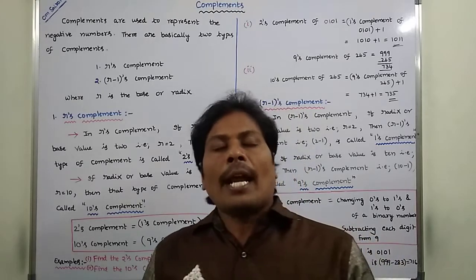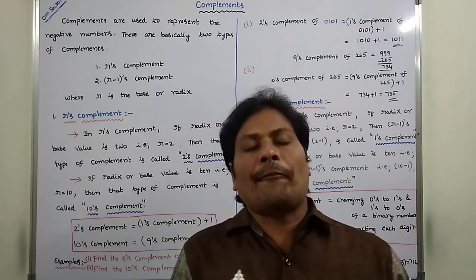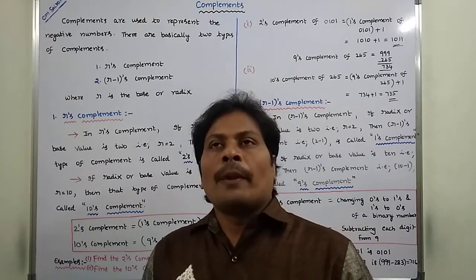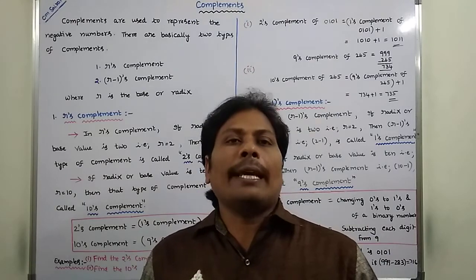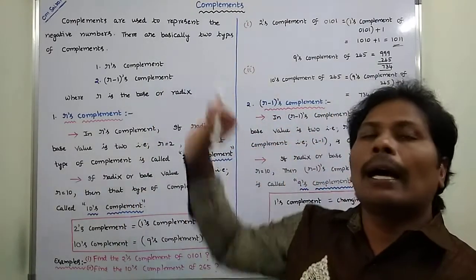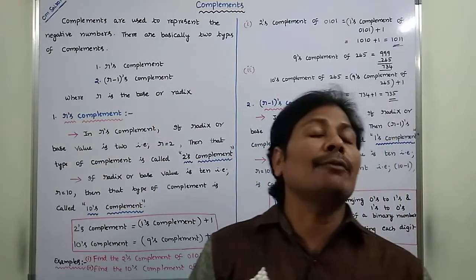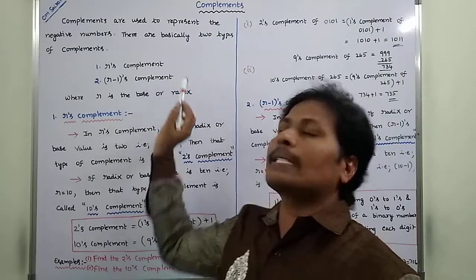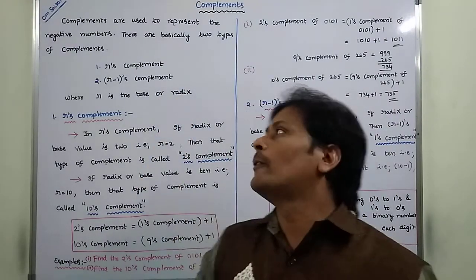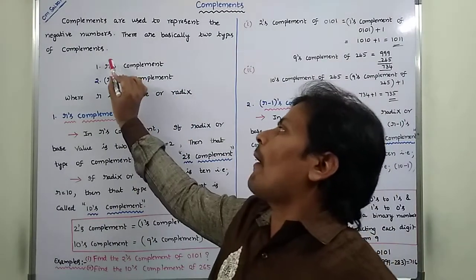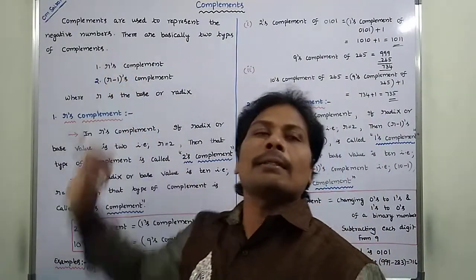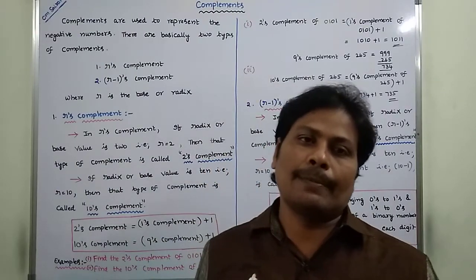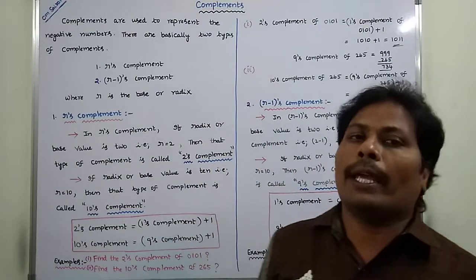Generally, there are two types of complements. The first one is R's Complement and the second one is R-minus-1's Complement. Here, R is called the Base or Radix.